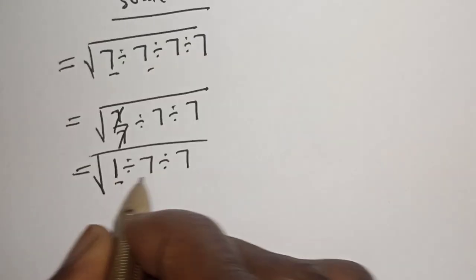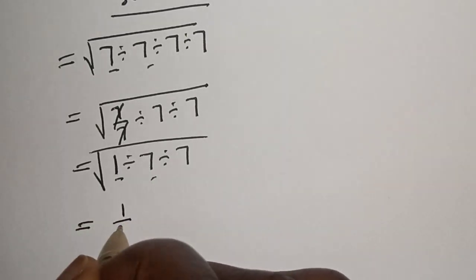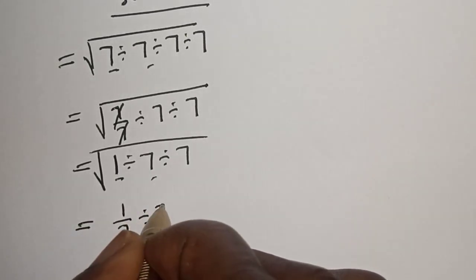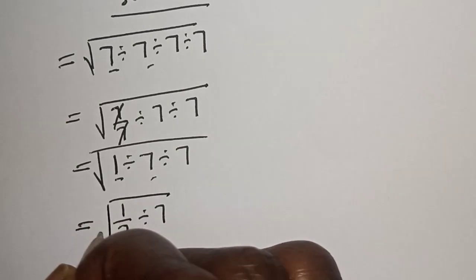Let's work with this first two again. This is equal to square root of 1 over 7 divided by 7.